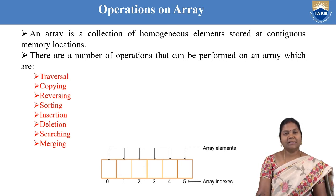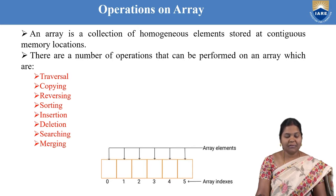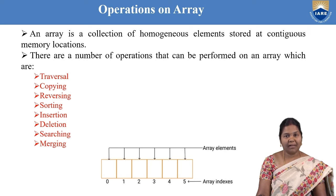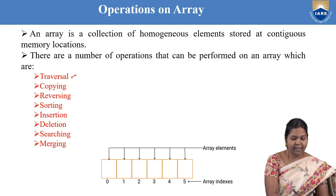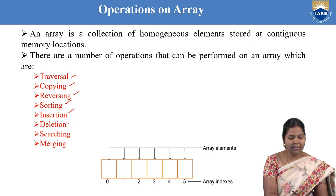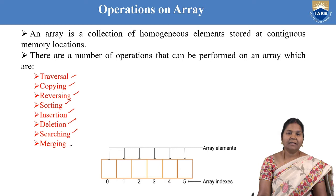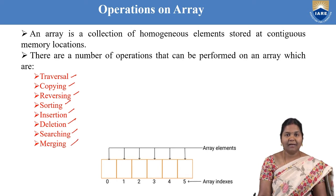Based on the nature of the array, what are the operations you can perform? These are the list of operations that can be performed on an array: traversal, copying, reversing, sorting, insertion, deletion, searching, and merging. These are the basic operations which can be performed on a data structure like arrays.